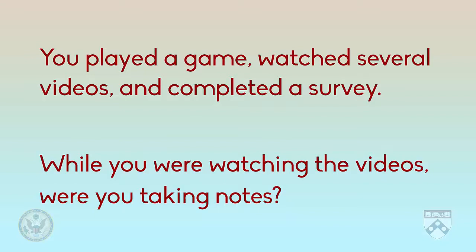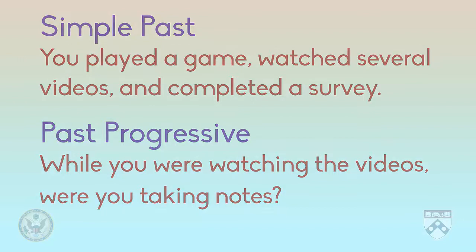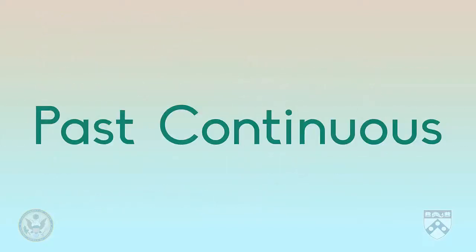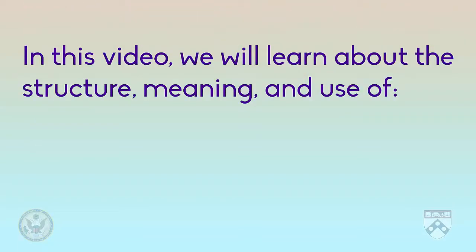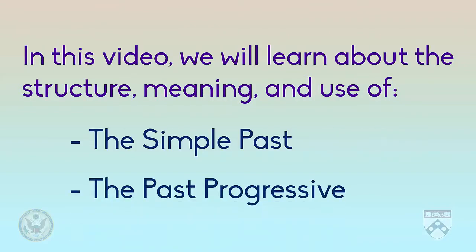Take a look at those sentences. There are two forms of the past tense being used there: the simple past and the past progressive, sometimes called the past continuous. In this video, we're going to talk about the structure and meaning of the simple past and the past progressive. We'll also talk about when we should use each of these forms.